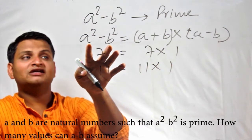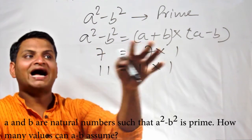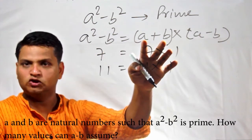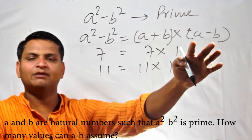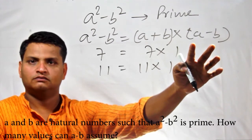Now, if a² - b² is prime, either the value of a + b is 1 or a - b is 1. Is that fine?